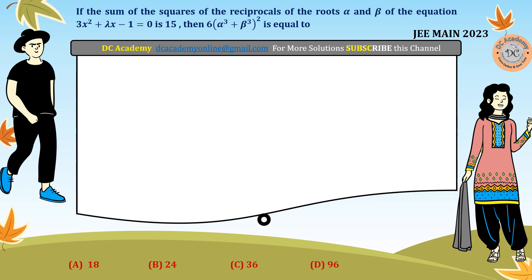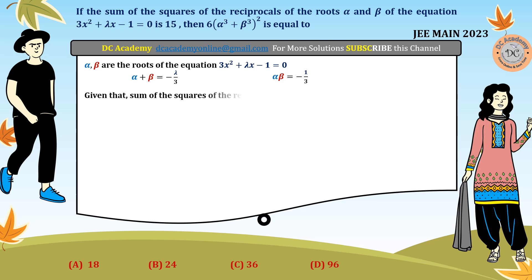Since α and β are roots of 3x² + λx − 1 = 0, the sum of the roots is −B/A, which gives us α + β = −λ/3. The product of the roots is C/A, so α·β = −1/3.